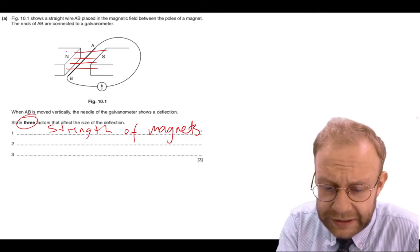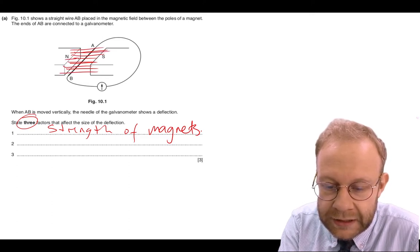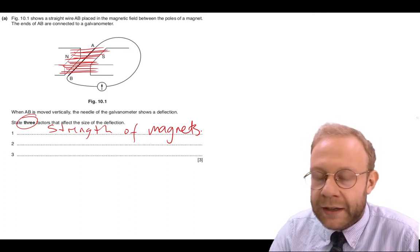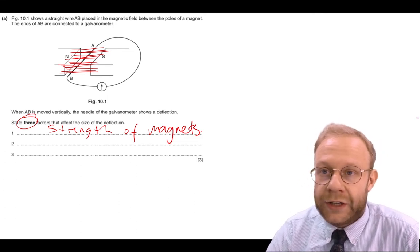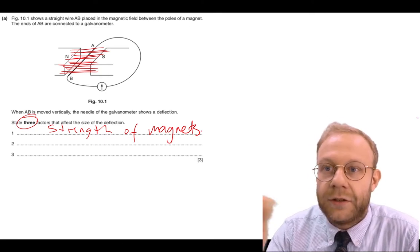If we increase the strength of the magnets, that means there's going to be more field lines within that region. As we move the wire, it's going to cut more field lines, and so the deflection and the current is going to be greater.